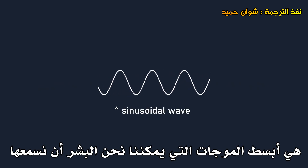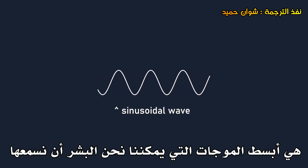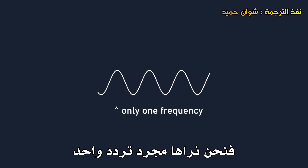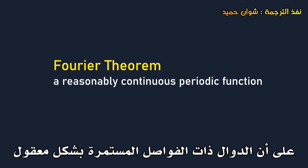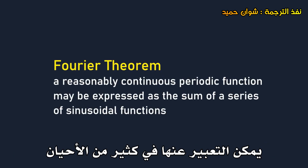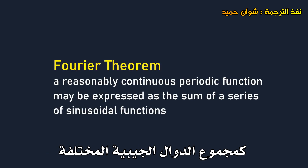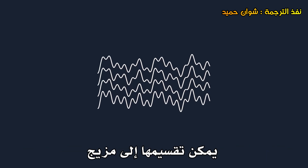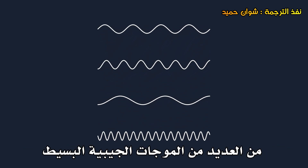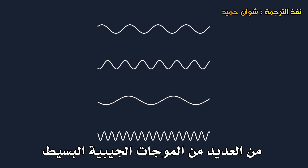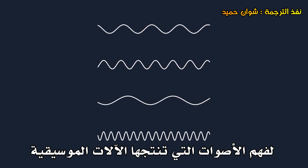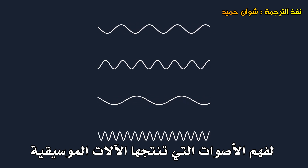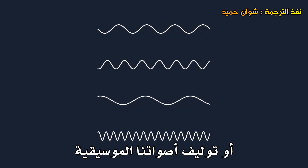Sinusoidal waves are the simplest waves that us humans can hear — we perceive them to be only one frequency. Now, the Fourier theorem states that periodic functions that are reasonably continuous can often be expressed as the sum of different sinusoidal functions. For sound, this means that the sounds we hear can be broken down into a combination of many simple sinusoidal waves, each with their respective frequencies. This information is very important to understanding the sounds produced by musical instruments, or when synthesizing our own musical sounds.